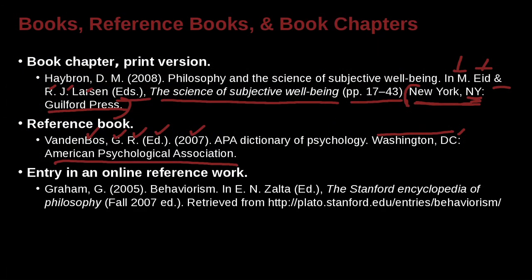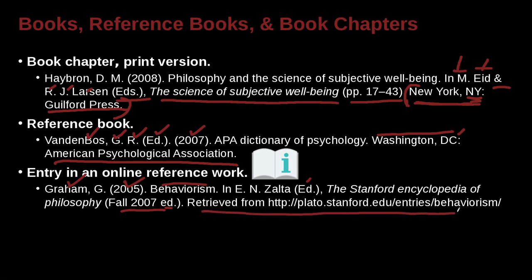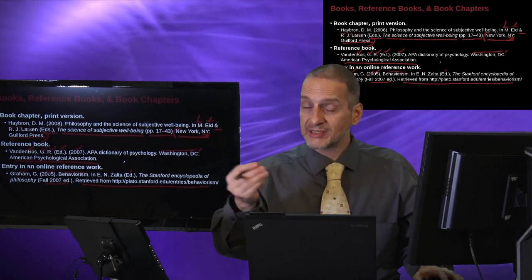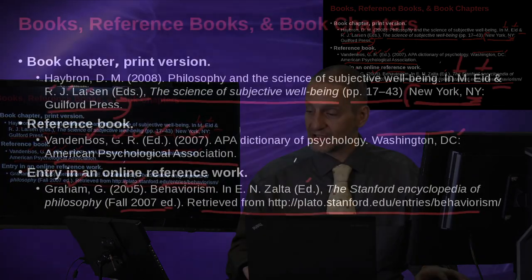How about some information that's online, but it's not really an article by one person — again, it's some kind of collection. Here we have an example with an actual author. Graham is the author, published in 2005. Behaviorism is the title, and it's inside something edited by E.N. Zolta, editor. That thing it's inside is called the Stanford Encyclopedia of Philosophy, with a date of 2007 — the edition. Ed. is defined by APA as 'edition.' It was retrieved from this URL. That's an online source that somebody has written and it's inside another container.